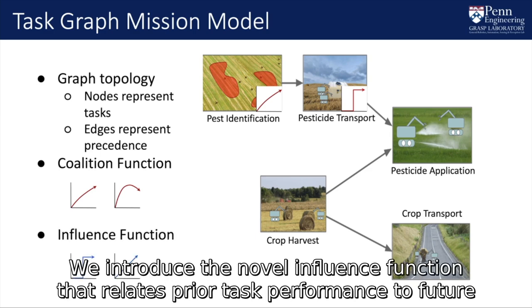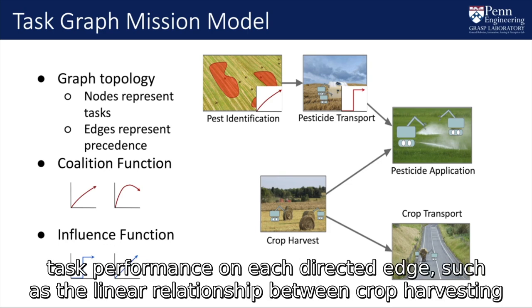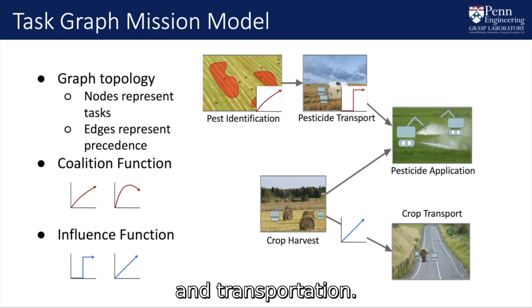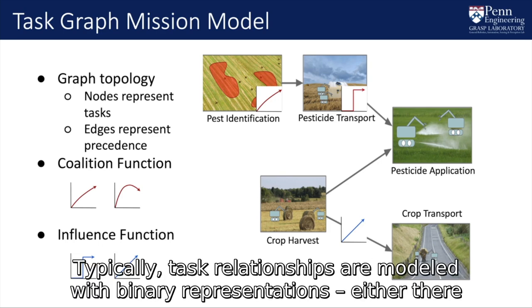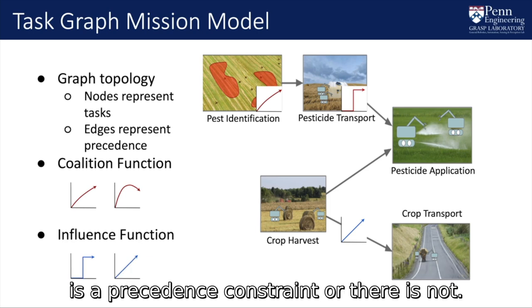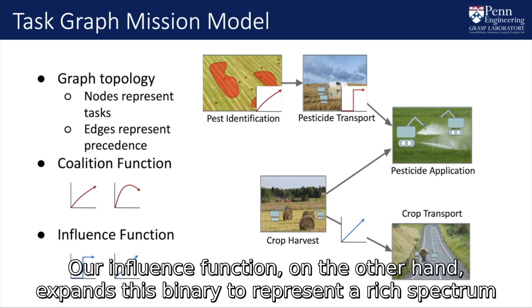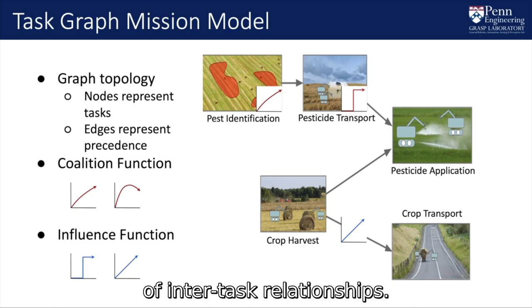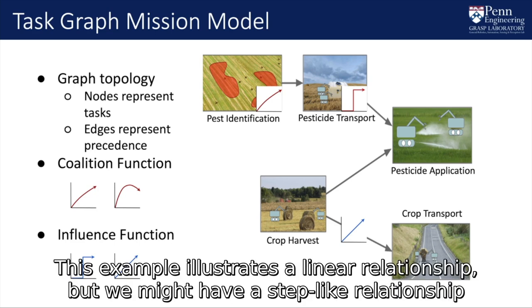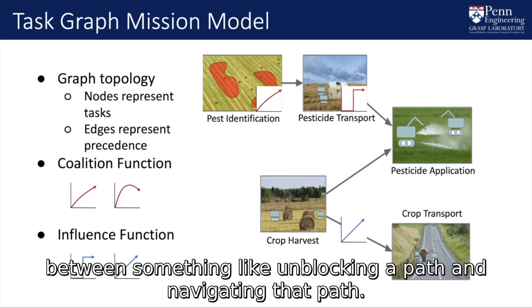We introduce the novel influence function that relates prior task performance to future task performance on each directed edge, such as the linear relationship between crop harvesting and transportation. Typically, task relationships are modeled with binary representations — either there is a precedence constraint or there is not. Our influence function, on the other hand, expands this binary to represent a rich spectrum of inter-task relationships. For example, we might have a step-like relationship between something like unblocking a path and navigating that path.